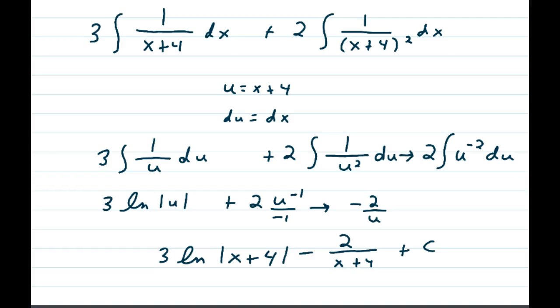We have 3 integral of 1 over u du plus 2 integral of 1 over u squared du, and we're going to use the power rule on the second one. So we're going to bring that u squared up top, become 2 integral of u to the negative 2.